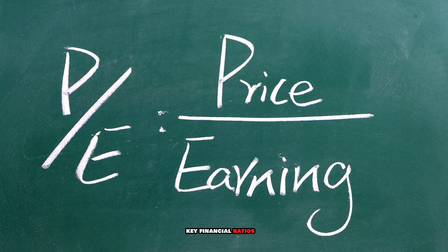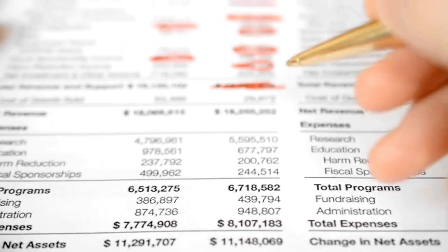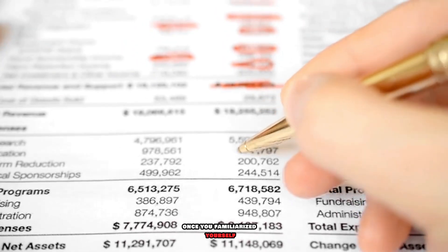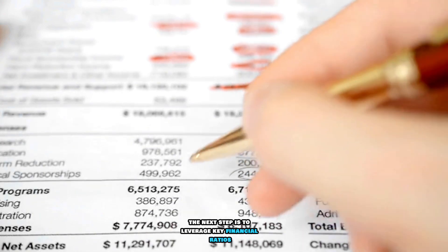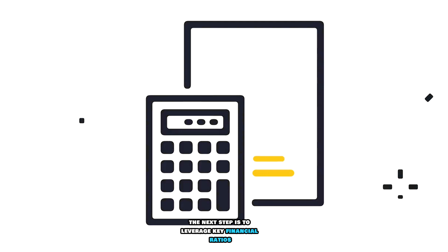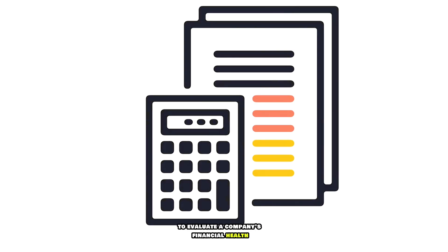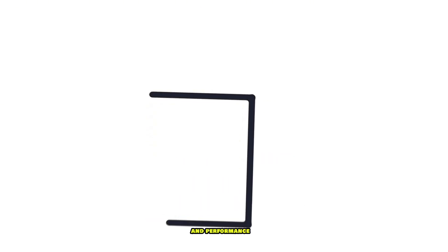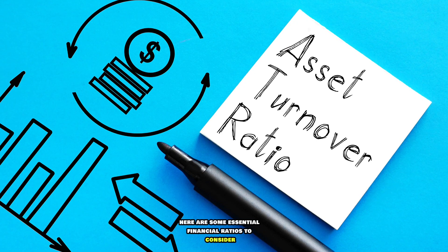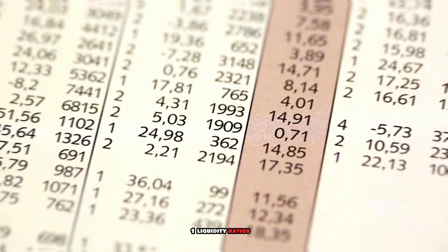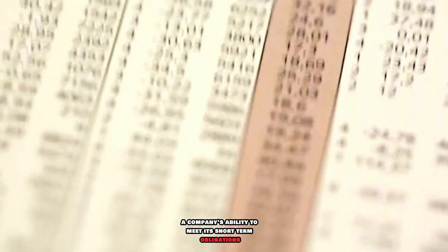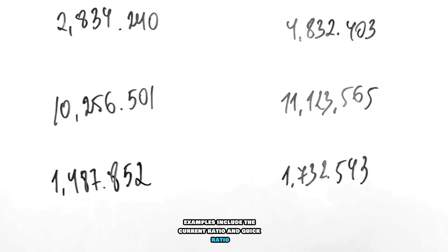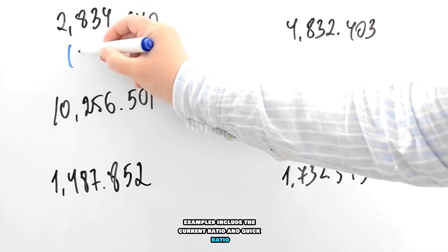Key Financial Ratios: Once you've familiarized yourself with the basics of financial statements, the next step is to leverage key financial ratios to evaluate a company's financial health and performance. Here are some essential financial ratios to consider. 1. Liquidity Ratios: Measures a company's ability to meet its short-term obligations. Examples include the current ratio and quick ratio.